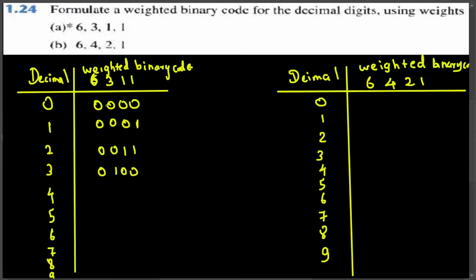For four, you can either use three plus one: 0111, or use another combination: 0101 — both are valid. For five, we need three plus one plus one, which gives 0111. Wait — for five that is 0111.